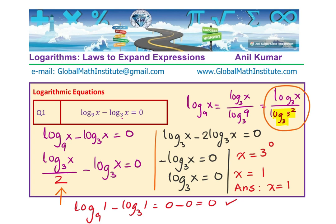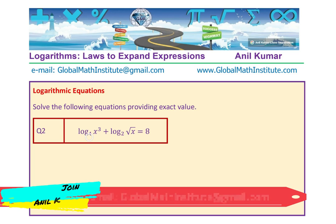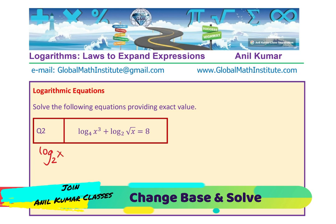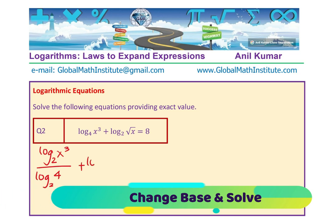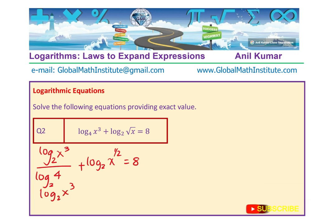Now that you know the technique, let's solve question number 2: log base 4 of x cubed plus log base 2 of x times square root of x equals 8. We need to change the base to 2. So we rewrite log base 4 of x cubed as log base 2 of x cubed divided by log base 2 of 4, plus log base 2 of x to the power of one half, equals 8. Since log base 2 of 4 equals 2, this becomes log base 2 of x cubed over 2.